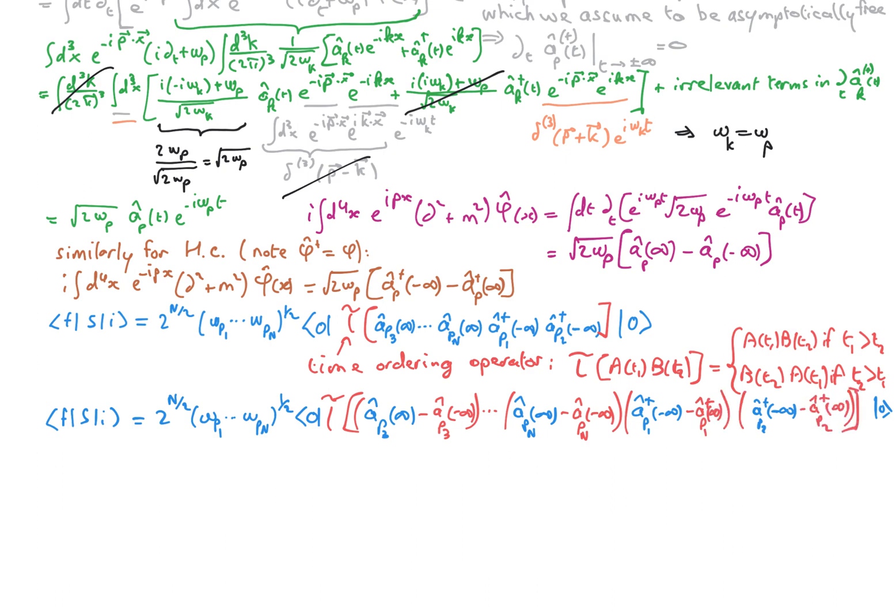We can then rearrange this by adding lots of zero terms. Indeed, all these additional terms do not contribute because if we expand this product, the time-ordering product is going to bring all the a annihilators with minus infinity to the right. But we know that these acting on the vacuum are going to give zero. Similarly, the a dagger at infinity are going to be brought to the left and acting on the vacuum on the left are also going to be zero.